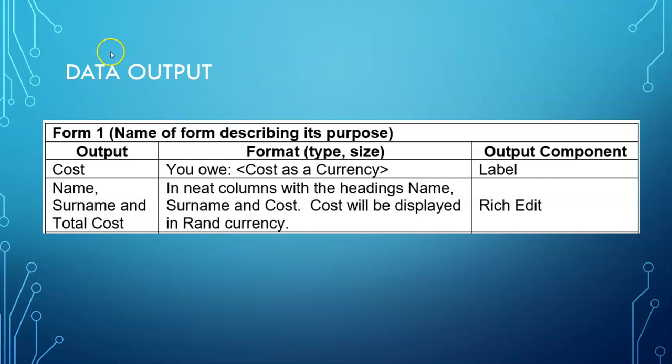The last part of phase one is our data output. So create that heading and you need to describe the output on two forms with significant output.